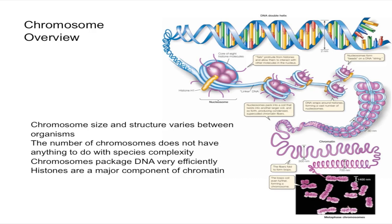The number of chromosomes varies a lot between species, but the number of chromosomes doesn't necessarily have anything to do with how complex a species is. For example, humans have 46 chromosomes and are a lot more complex than goldfish, which have 94 chromosomes. You can't determine the number of genes or how genetically diverse a species is just by knowing the number of chromosomes, because some chromosomes could be longer than others.